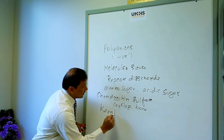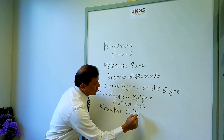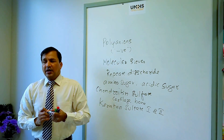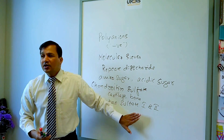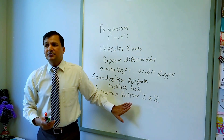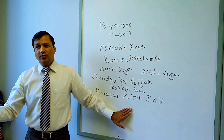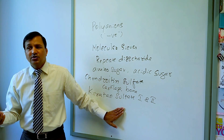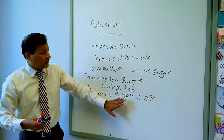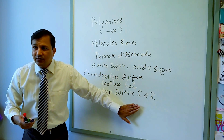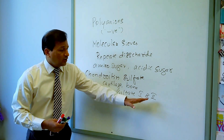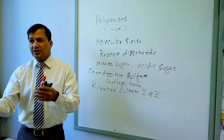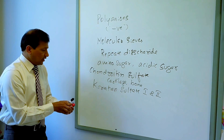Keratan sulfate has two types: keratan sulfate 1 and keratan sulfate 2. Keratan sulfate 1 is found in the cornea — the transparency of the cornea is due to keratan sulfate 1 along with dermatan sulfate, which also contributes to corneal transparency. Keratan sulfate 2 is found in loose connective tissue.